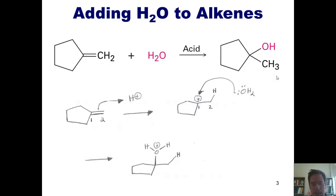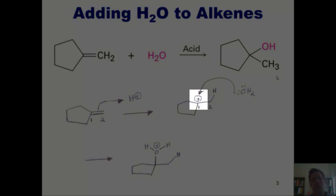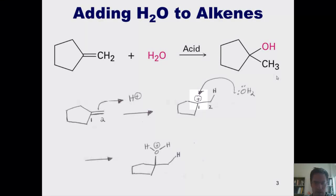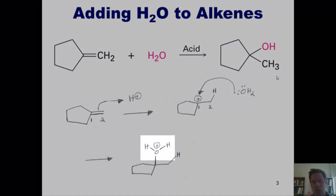I want to focus on something that's very important. When I've drawn carbocations, that is a positive charge on a carbon, I've told you in the past that having a positive charge on a carbon indicates that that carbon only has six electrons around it.